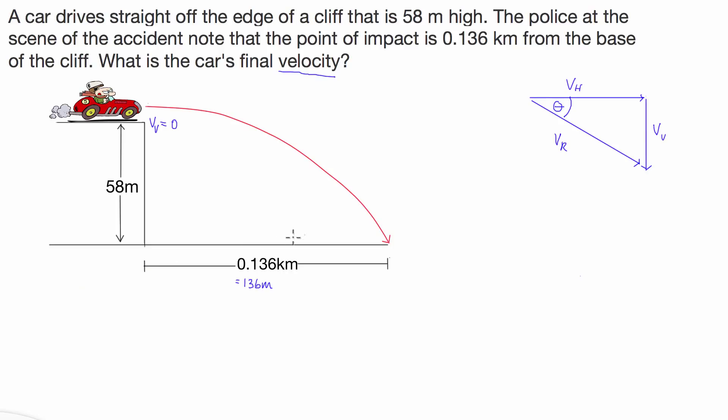The equation that we're going to use to solve this is s is equal to ut plus one half at squared, with s being our distance, u being our initial velocity, t being the time that he's in the air for, and acceleration being acceleration due to gravity. So the distance that the car is traveling in the vertical direction is 58 meters.